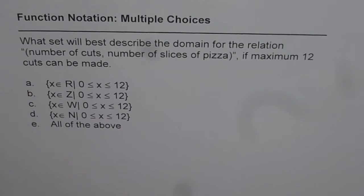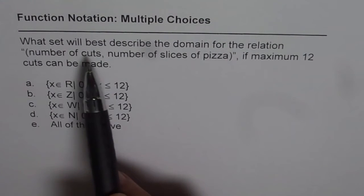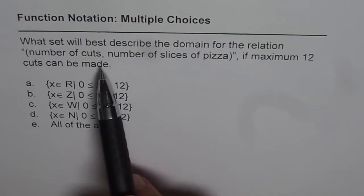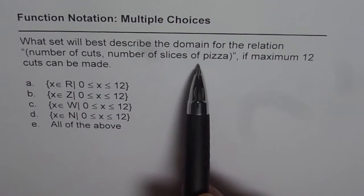With the help of this example, we'll try to understand the set of numbers. This multiple-choice question on function notation is: what set will best describe the domain for the relation (number of cuts, number of slices of pizza)?